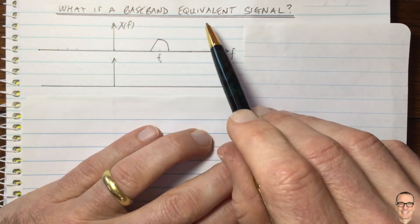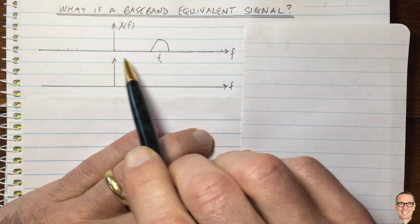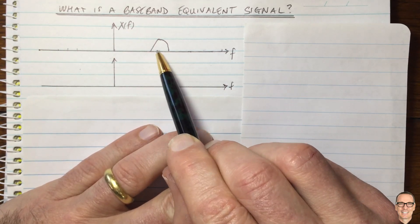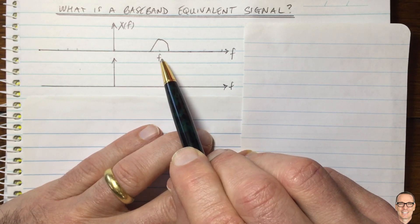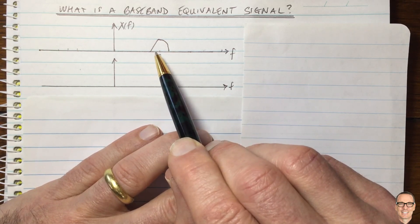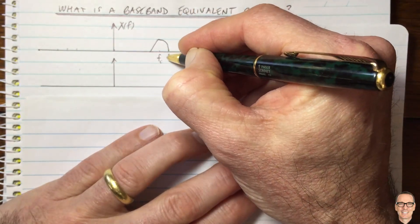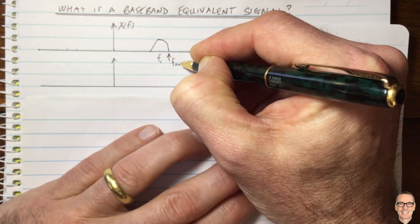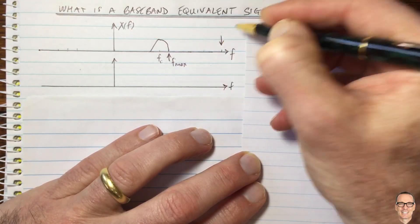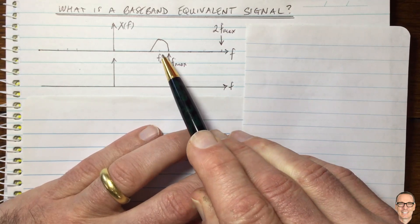What is a baseband equivalent signal in communications? Here we have a picture of a passband signal in the frequency domain. It only exists in a frequency range around what we call the carrier frequency. If we were to sample this and try to do perfect reconstruction, Nyquist tells us we would need to sample at twice the highest frequency component, twice f-max. And that is a very high frequency for radio communications.